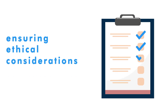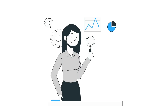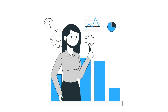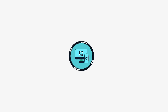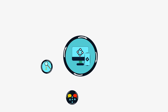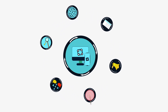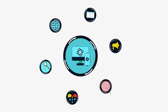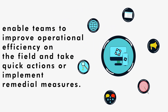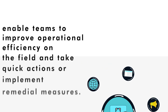Identifying key areas and indicators that need to be improved in these sessions, such as ensuring ethical considerations, attendance, as well as adherence to lesson plans. These insights from compliance checks, discussed with the programs through a two-week communication channel, enable teams to improve operational efficiency on the field and take quick actions or implement remedial measures.